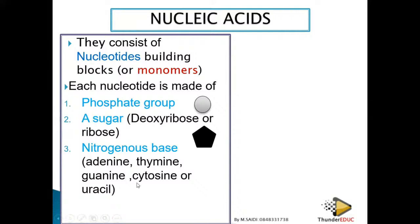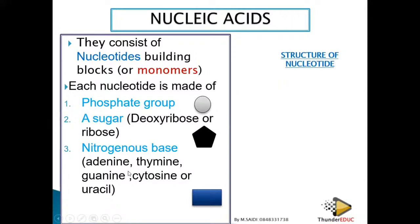The third component of a nucleotide is the nitrogenous base. There are five types: adenine, thymine, guanine, cytosine, and uracil. DNA has specific nitrogenous bases and RNA has its own specific ones — we will see which bases belong to DNA and which to RNA. The structure of a nucleotide is therefore made up of a phosphate group, a sugar, and a nitrogenous base.